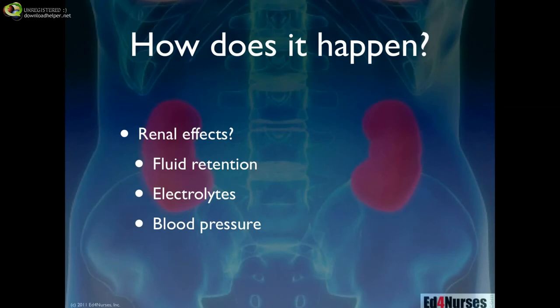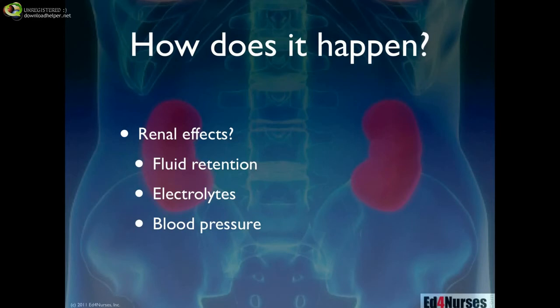How does a patient end up developing atrial fibrillation? We think it's the renal effects of the drug that cause patients to develop atrial fibrillation and atrial flutter as new-onset dysrhythmias when taking these medications. The renal effects include fluid retention, electrolyte disorders, and alterations in blood pressure. NSAIDs decrease perfusion through the kidneys, which leads to fluid retention — the kidneys think there isn't enough volume on board and start retaining more. Electrolyte disorders can result from both the decreased renal perfusion and increased blood pressure. As renal perfusion decreases, the kidneys stimulate an increase in blood pressure, and blood pressure alterations can affect both the heart and the kidneys.